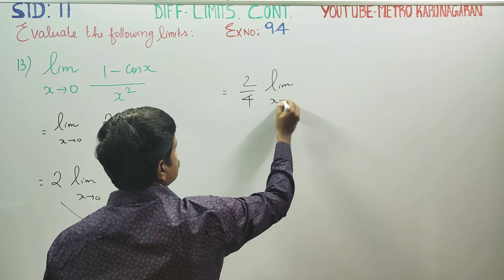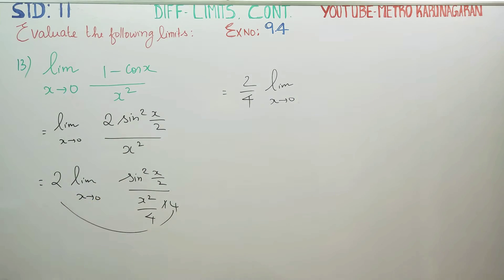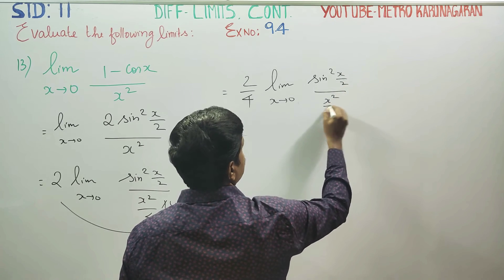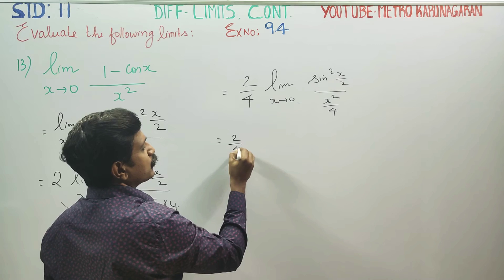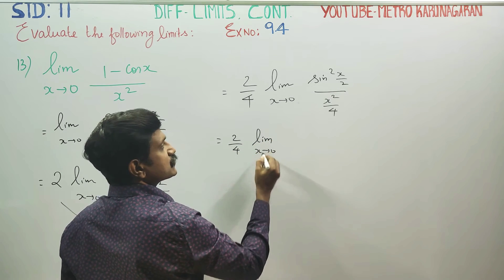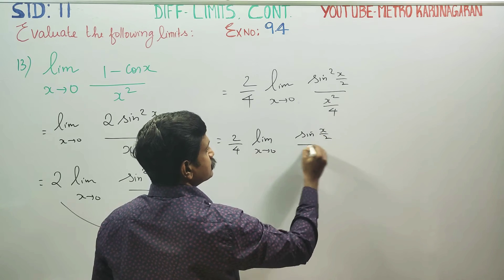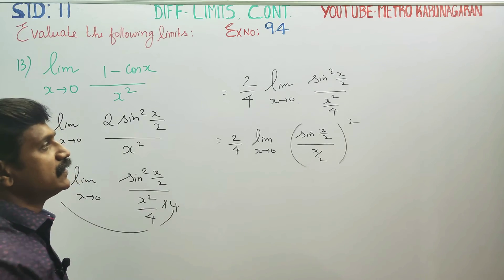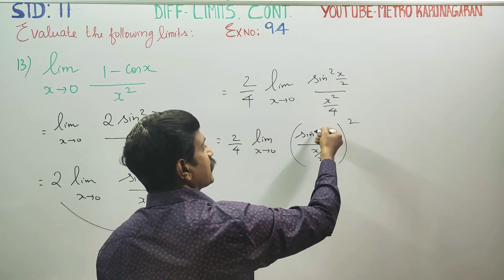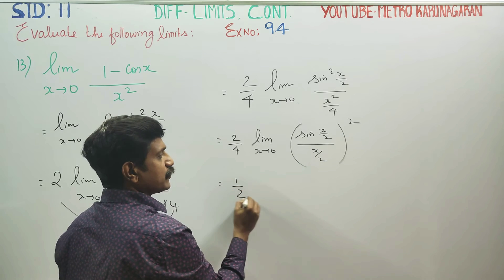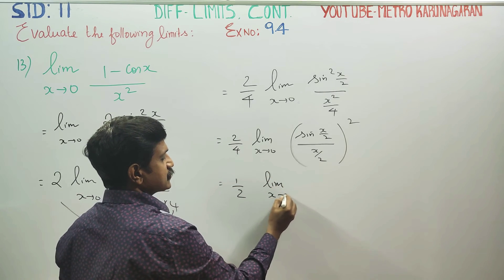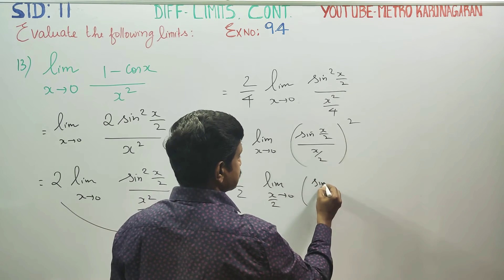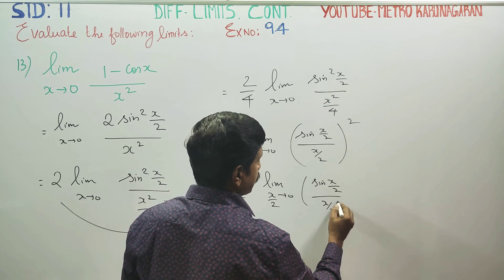So 2 by 4, limit x turns to 0, sin square x by 2 by x square by 4. This can be written as 1 by 2, limit x turns to 0. Divide by 2 on both sides: 2 divided by 2, giving sin x by 2 by x by 2.